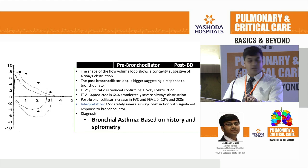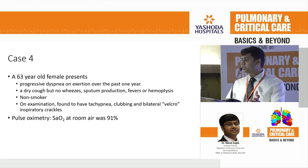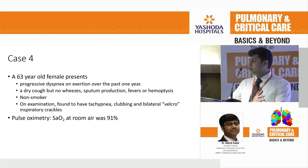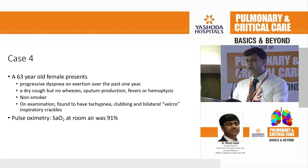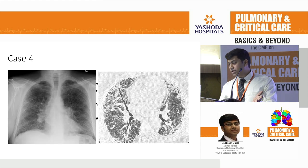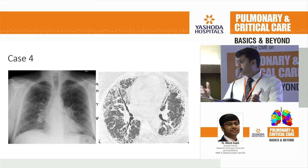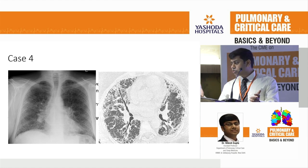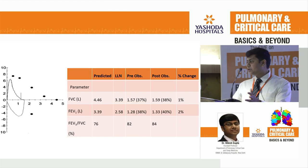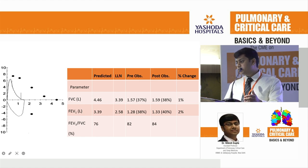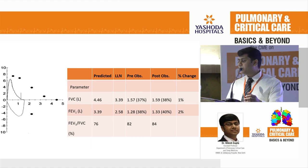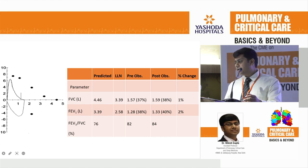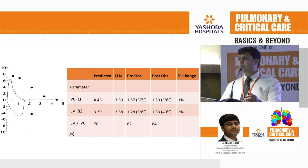Case 4: A 63-year-old female with progressive dyspnea on exertion for one year, dry cough, no wheeze, no sputum, no fever, no hemoptysis. Examination showed tachypnea, clubbing, and bilateral Velcro crepitations. Saturation at room air 91%. X-ray showed a dirty lung picture with poorly defined cardiac borders. CT showed interlobular thickening pattern. Clinically and radiologically, this is a restrictive disorder. PFT shows the patient's pattern is way below the predicted pattern. The ratio is normal, but FVC is reduced to 37% — suggesting possible restriction. To confirm, lung volumes are needed.